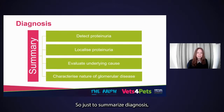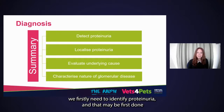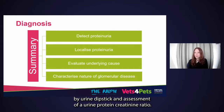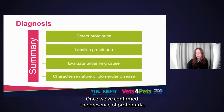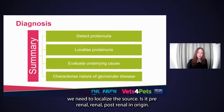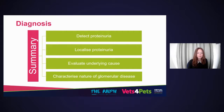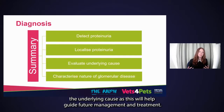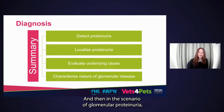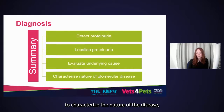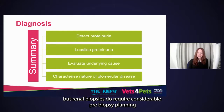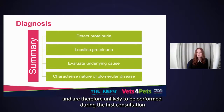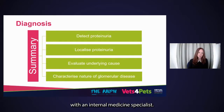To summarize the diagnostic approach: firstly, identify proteinuria using urine dipstick and assessment of the urine protein creatinine ratio. Once confirmed, localize the source — is it pre-renal, renal, or post-renal? After localizing, evaluate the underlying cause as this will guide management and treatment. In the scenario of glomerular proteinuria, it may be beneficial to obtain a renal biopsy to characterize the nature of the disease, but renal biopsies require considerable pre-biopsy planning and are unlikely to be performed during the first consultation with an internal medicine specialist.